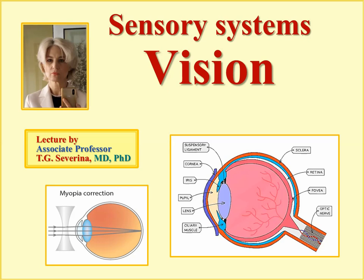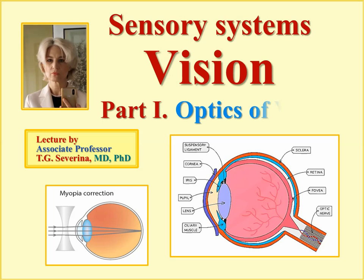This lecture considers general characteristics of the sensory systems and then physiology of vision, and consists of two parts. Part one considers the optics of vision on the basis of a detailed structure of the visual system peripheral part — the eye.